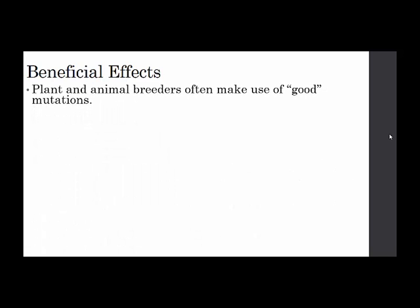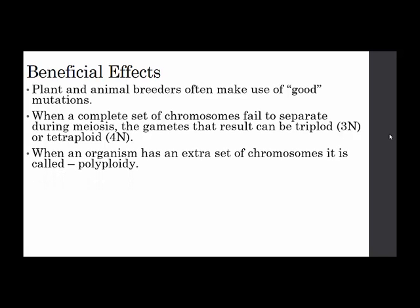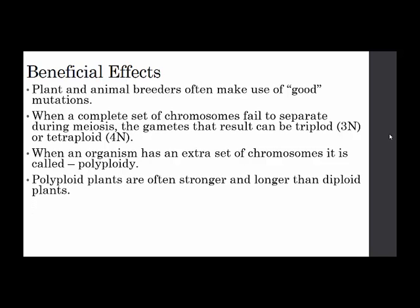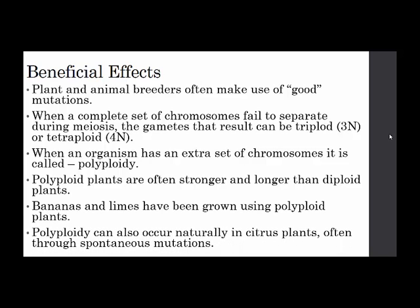Plant and animal breeders often make use of beneficial mutations. When a complete set of chromosomes fails to separate during meiosis, the gametes that result can be triploid or tetraploid — tri meaning three, tetra meaning four. When an organism has an extra set of chromosomes, it's called polyploidy. Polyploid plants are often stronger and larger than diploid plants. Bananas and limes have been grown using polyploid plants for this reason. Polyploidy can also occur naturally in citrus plants through spontaneous mutations.